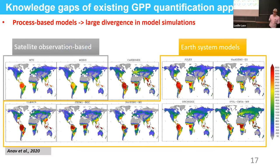Due to process complexity and parameter uncertainties, we see large divergences in model simulations. Earth system models have successfully simulated the two highest carbon sinks — the Amazon rainforest and the Congo tropical African rainforest — but in terms of magnitude and spatial distribution of the carbon sink there are still many divergences. From satellite observation-based models, we also find many differences in their estimates.